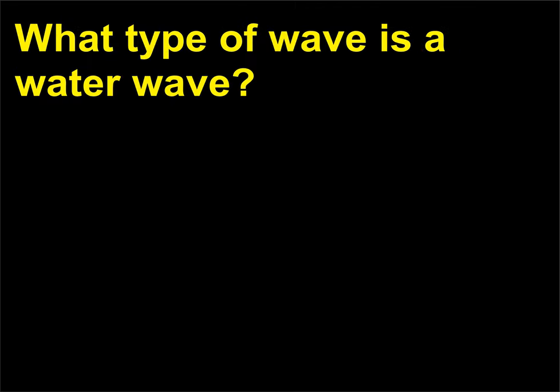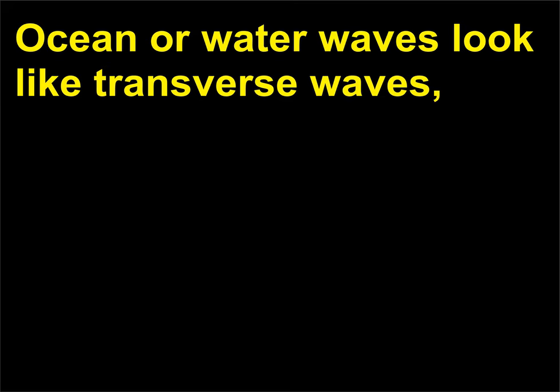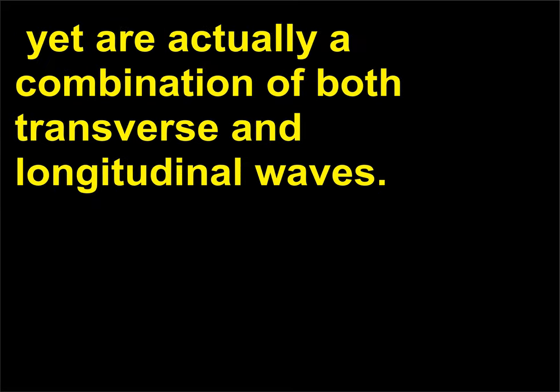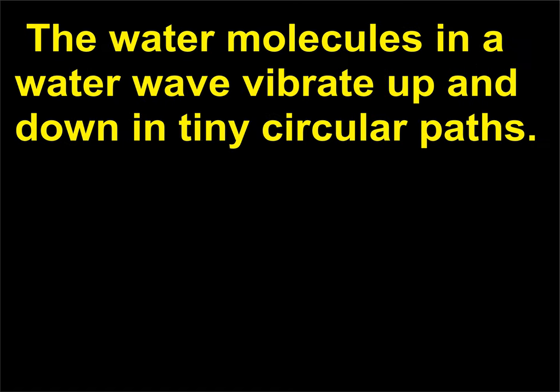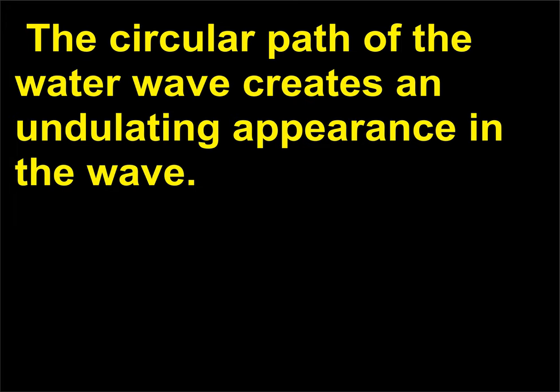What type of wave is a water wave? Ocean or water waves look like transverse waves yet are actually a combination of both transverse and longitudinal waves. The water molecules in a water wave vibrate up and down in tiny circular paths. The circular path of the water wave creates an undulating appearance in the wave.